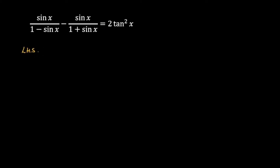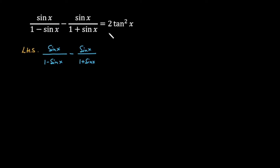The left hand side of this identity is sin x over 1 minus sin x, minus sin x over 1 plus sin x. When you see this whole identity you can see that there is sine on the left hand side and there is a tangent on the right hand side. So somehow I have to change this expression into sin over cos, and I will get the required result.